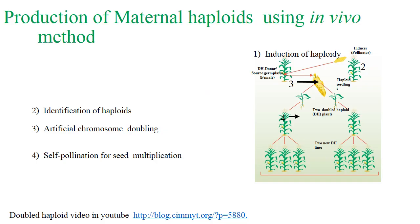Coming to production of maternal haploid using in vivo method. There are three steps: identification of haploid, artificial chromosome doubling, and self-pollination for seed multiplication.